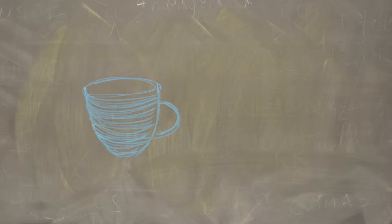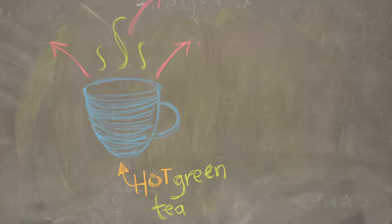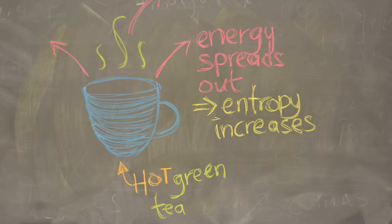A system, say, this mug of green tea has a certain degree of disorder, in other words entropy, associated with it. As the energy from the hot mug of green tea disperses into the surroundings, the irreversible change in energy increases the entropy of that system.